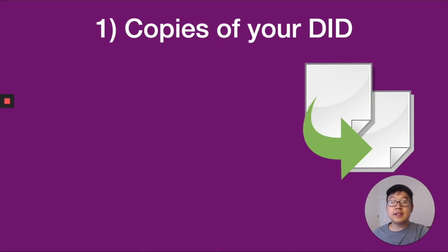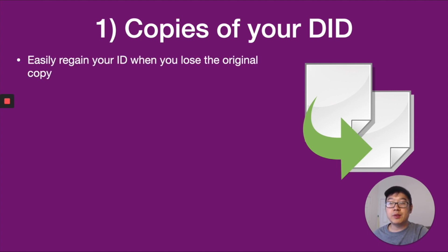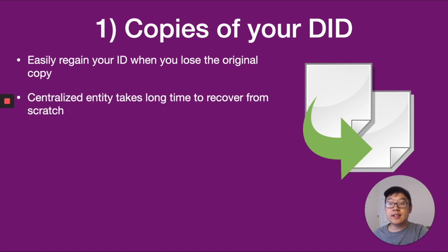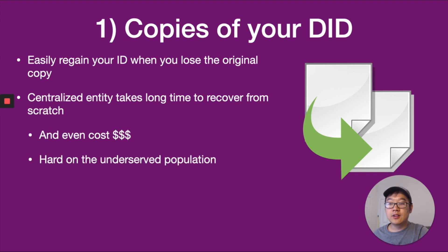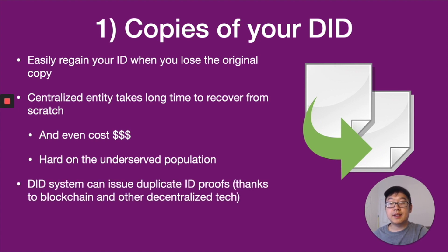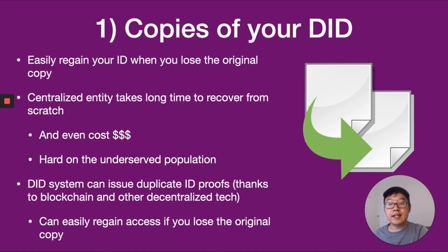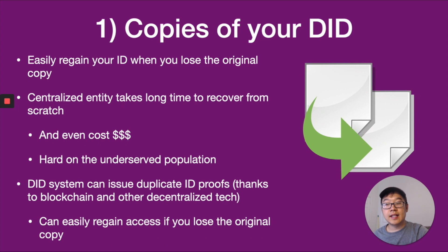Back to the benefits of DID systems. First is copies — if you lose your original ID copy, you can easily regain it. Centralized identity systems take a long time to recover from scratch; you have to call in, visit in person, wait for the mail, and it can cost a lot of money. For underserved populations, this can be really hard if they ever lose an ID source. The DID system can issue duplicate ID proofs thanks to blockchain and other decentralized tech, so you can easily regain access. Of course, this means you need to take extra care to save these duplicate proofs, and it could require some tech savviness, at least initially.